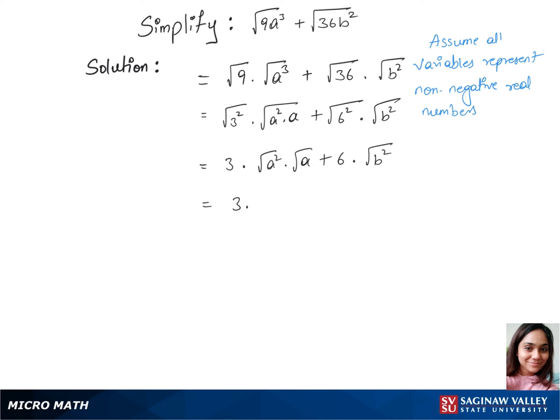Now we have three times, let's write root of a squared as modulus of a since a and b are non-negative times root a, plus six times the same here, modulus of b. We have 3a root a plus 6b, which is our final answer.